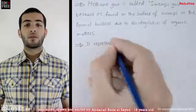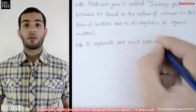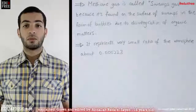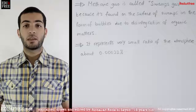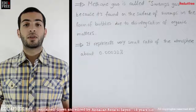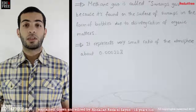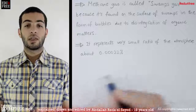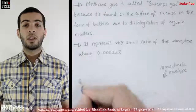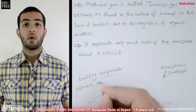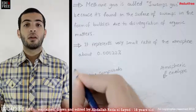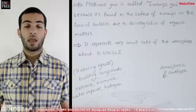Methane represents a very small ratio of the atmospheric envelope — about 0.00022% — and despite this fact, it's considered to be one of the most important and basic compounds that helped build the atmospheric envelope, along with other compounds like ammonia, water vapor, and hydrogen. All of these compounds are considered to be reducing agents.